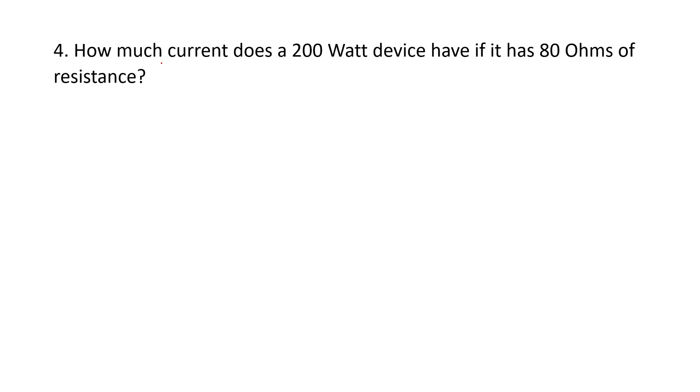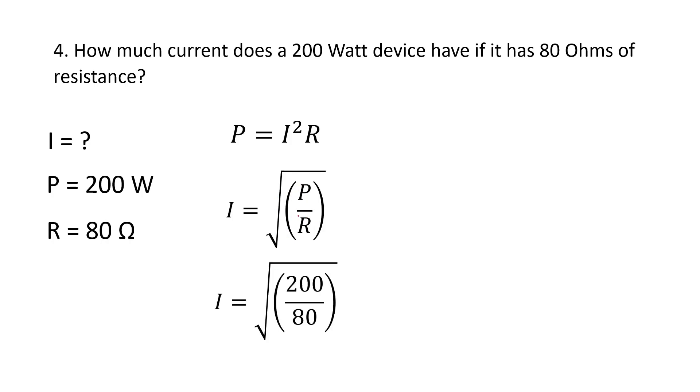Next problem: How much current when we have a 200 watt device that has 80 ohms of resistance? This is going to lead you to this equation, but we have to rearrange it for I. We have to divide out the R. Once we divide out the R, we are going to have to take the square root of both sides to get rid of this. You get square root of P over R. Make sure everything is in the parentheses and in the square root so that it keeps everything in the square root. You're square rooting everything. And so we get 1.58 amps for this problem.